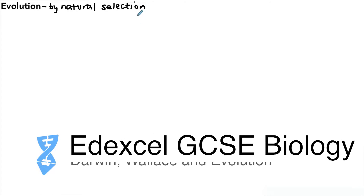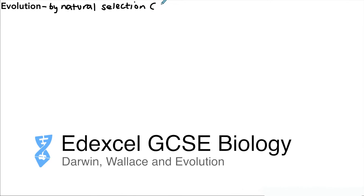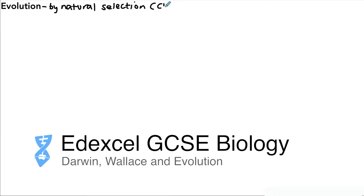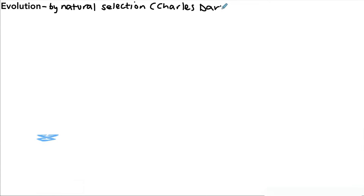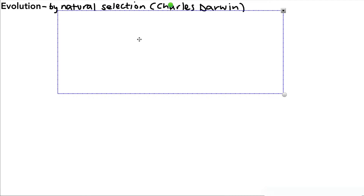Evolution is a process that happens by natural selection, and the theory was developed by a very famous biologist called Charles Darwin.